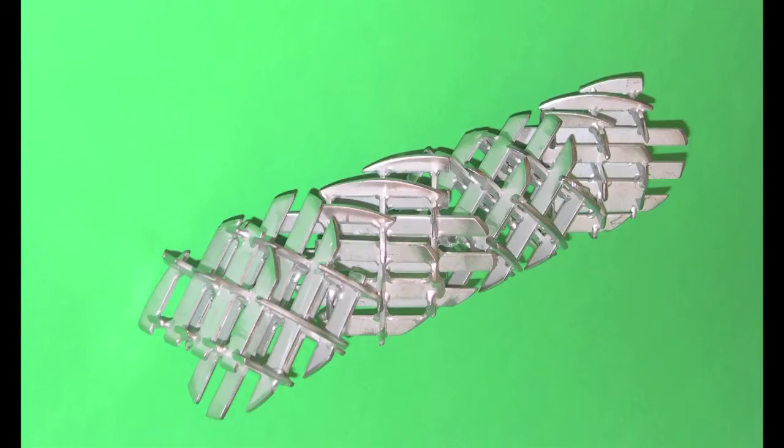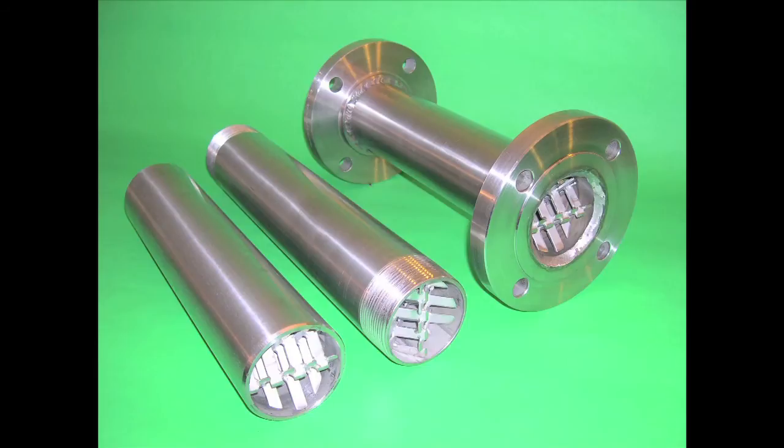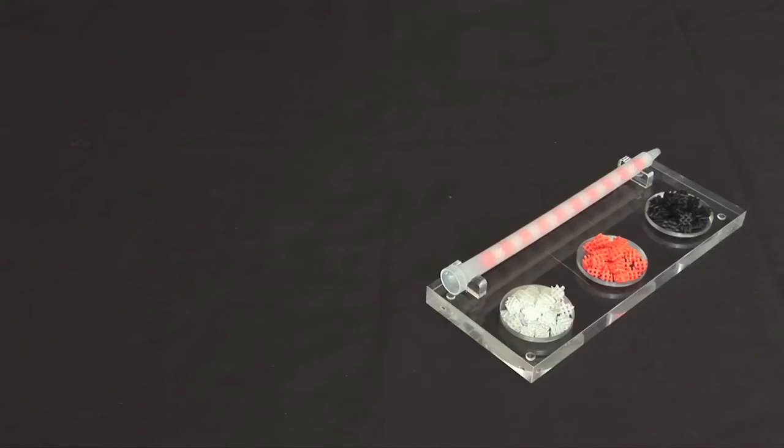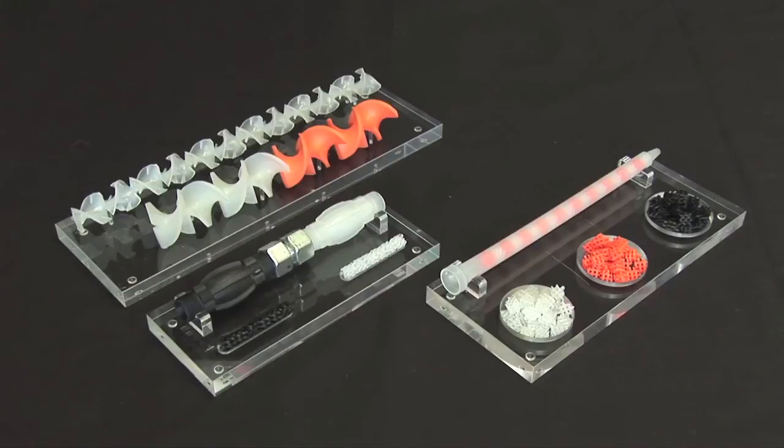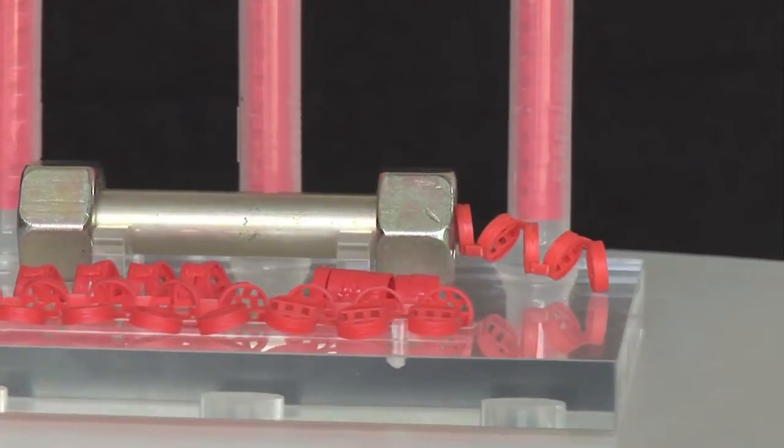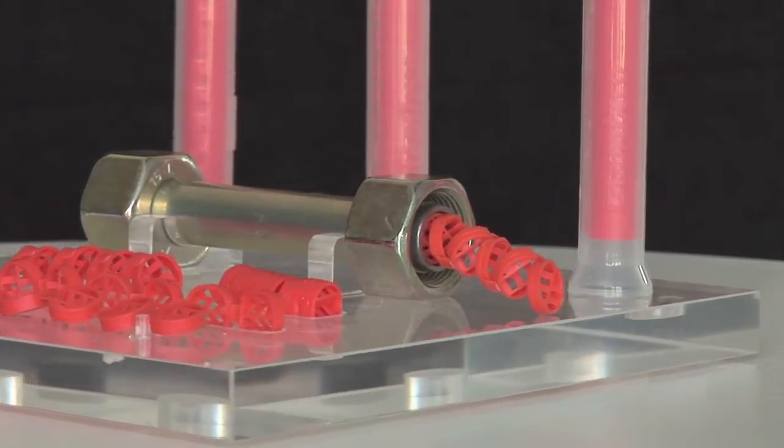They mix viscous fluids like glues, silicones, and sealants efficiently. Grid mixers made of plastic are used as disposable mixers for difficult mixing tasks involving reactive resins or hardener systems.